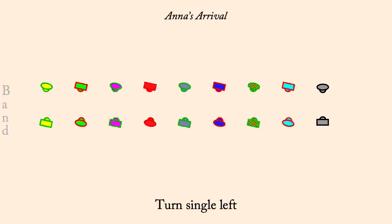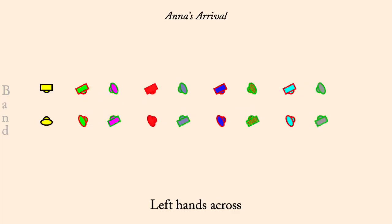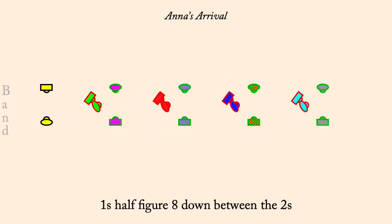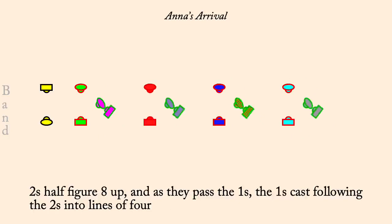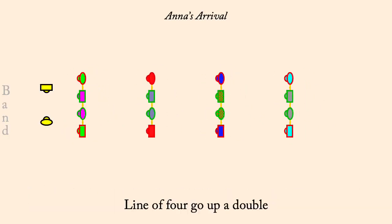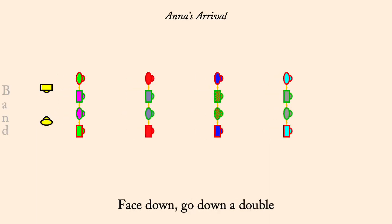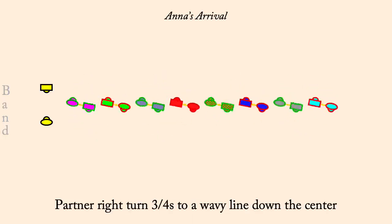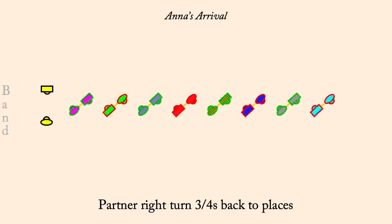Left hands across. Circle left. Ones half figure eight down between the twos. Twos half figure eight up into the middle of a line of four as ones cast to ends. Line of four go up the hall. Neighbor set. Line of four go down the hall. Ones gate twos. Partner right three quarters to a wavy line. Balance right then left. Partner right three quarters to places. Turn single left.